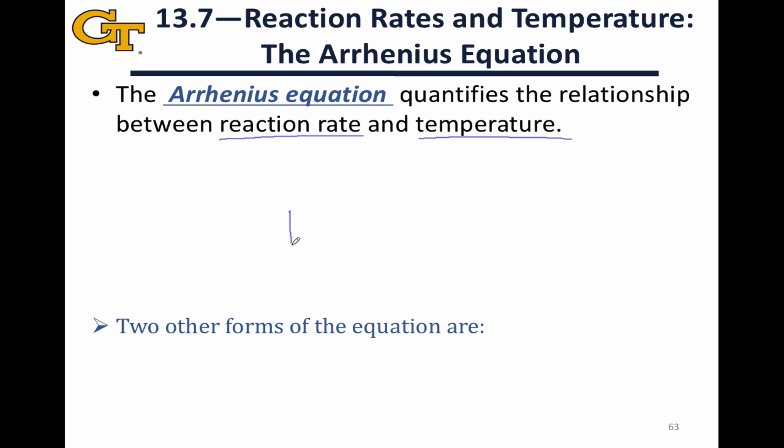Mathematically, we can write the Arrhenius equation as k, the rate constant, is equal to A times e, the base of the natural logarithm, to the power of negative Ea divided by RT. It's important to understand what each of the symbols within this equation represents.